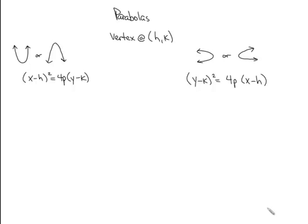Let's look at the example: (x − 1)² = 8(y + 2). Notice this matches the Y-direction form, so it opens either up or down. The way to tell which is by looking at the variable on the side with the 4p. Here, 4p corresponds to 8, since (x − h)² is accounted for and (y − k) is accounted for, so 4p = 8.